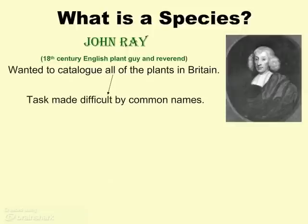This guy, John Ray, wanted to make a list of all of the plants in Great Britain. He would go from town to town, take samples, ask people, and take his notes to see what kind of plants people had in different areas. What he noticed was that sometimes he would have the same name for different plants, and sometimes different names for the same plant — or two plants were awfully close — so what really was the dividing line between one type of organism and another?